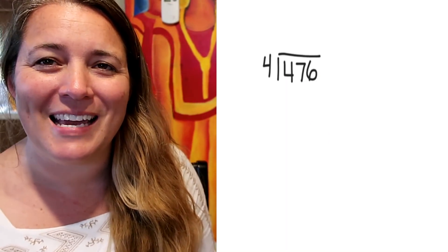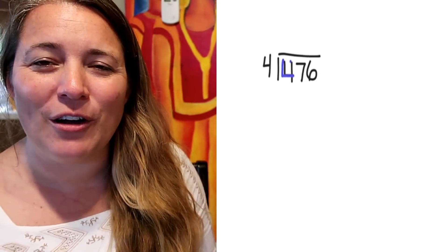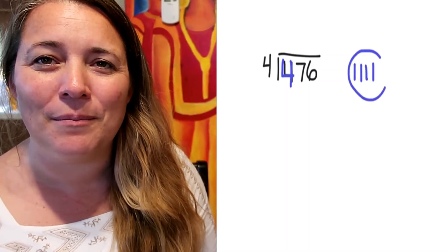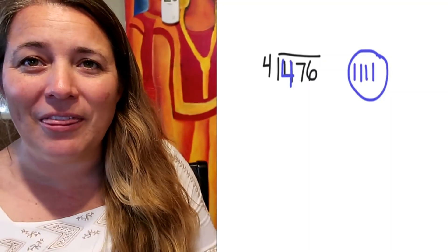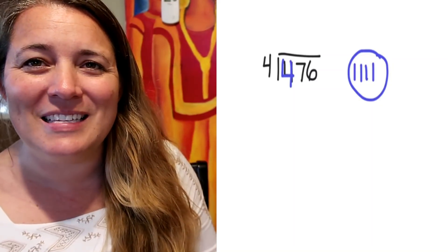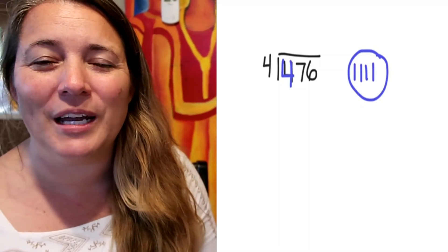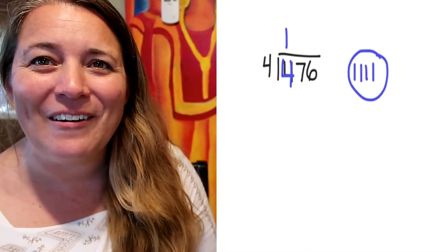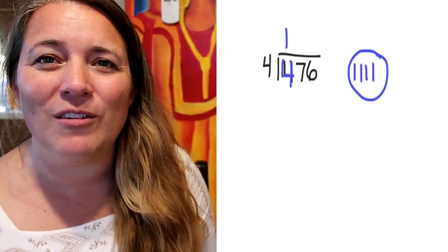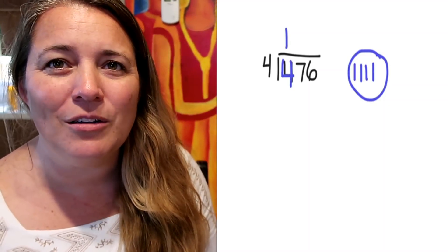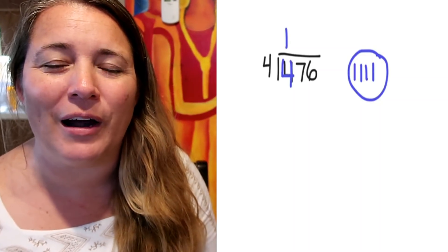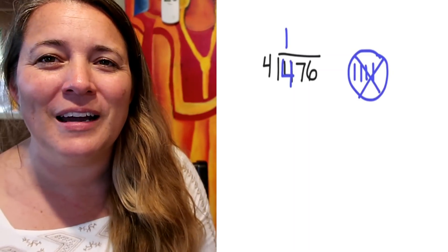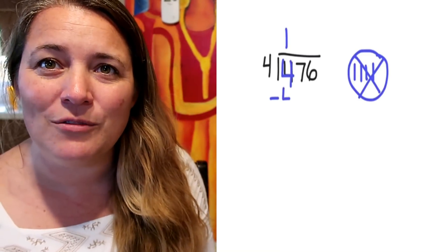In the first part we take the 4, draw 4 sticks out: 1, 2, 3, 4 — stop, make a group. I have nothing left over, so I have just one group. We write that on top. Now we have to show we've used that one group by taking away that 4. 4 minus 4 is 0.